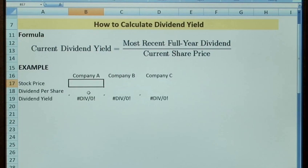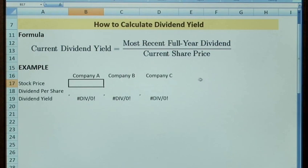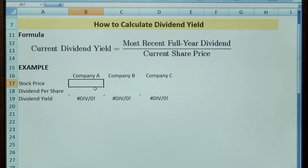If we look at an example just to calculate dividend yield, you can see the formula. So it's basically: current dividend yield equals your most recent dividend divided by your share price. So we're going to take three companies in this example and all we need is the stock price and the dividend.